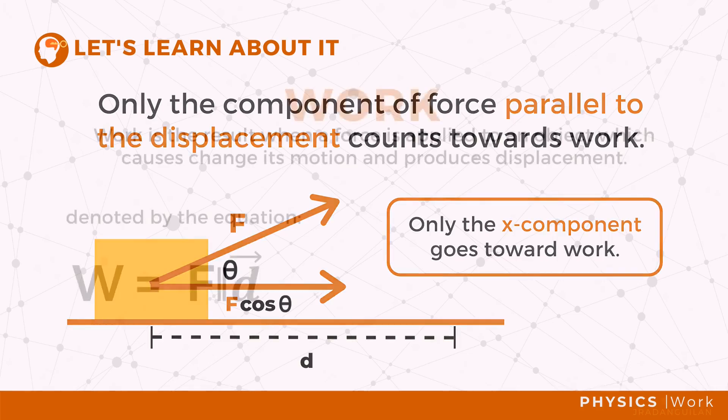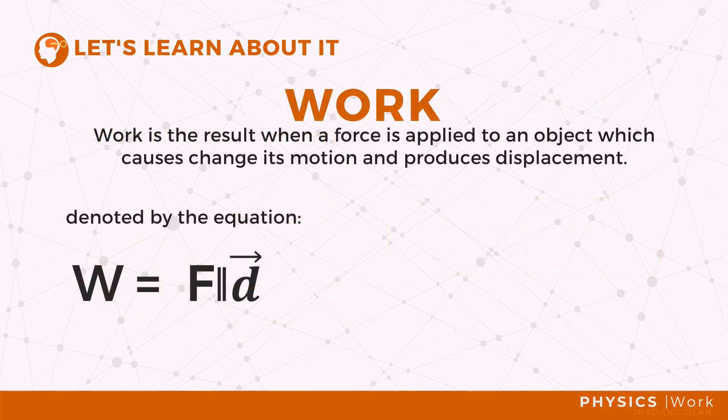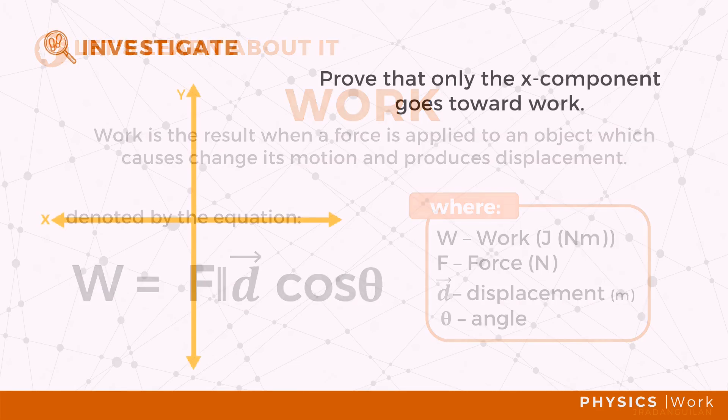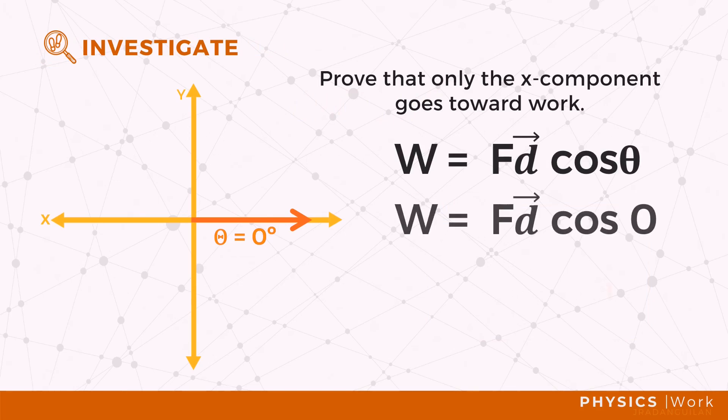In this case, instead of using W = Fd, we could calculate for the work done on the box using W = Fd cos θ, where θ is the angle from the horizontal. If θ is zero, meaning the applied force is horizontal, cos θ will be equal to one, leaving us with work equals Fd.